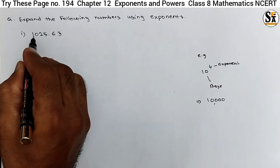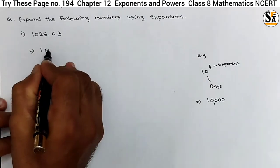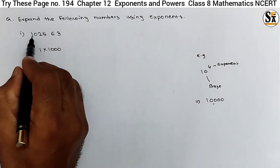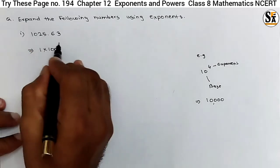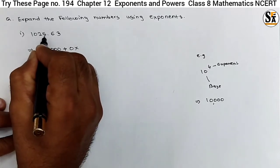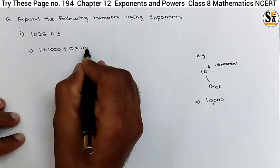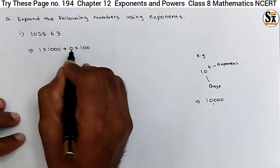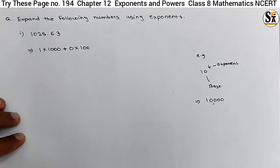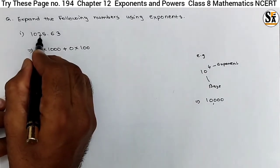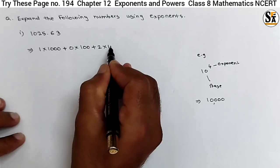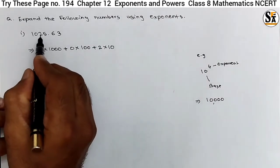For the number 1025.63: the digit 1 can be expressed as 1 into 1000, because the place value of 1 is 1000. Then 0 — the place value is 100, so we write 0 into 100. Even though 0 into 100 is 0, we must still express it using its place value. Then 2 — we must multiply it by 10, because it is in the tens place.